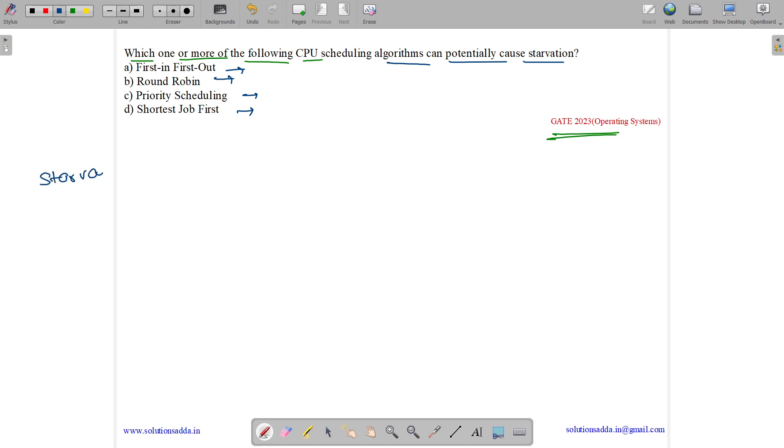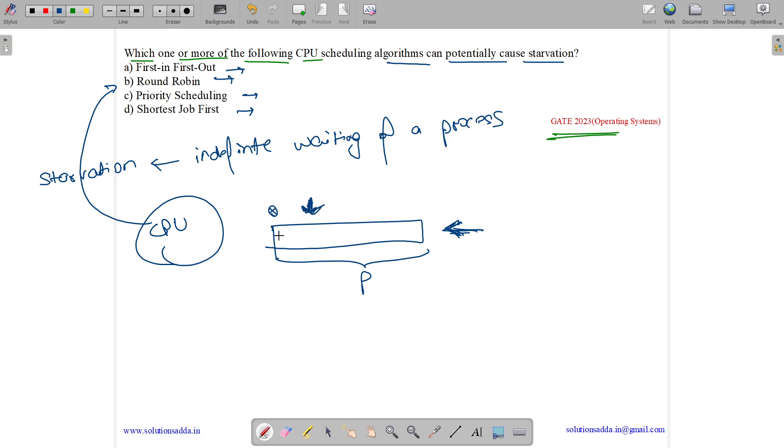First of all, let us understand what is the meaning of starvation. Starvation means indefinite waiting of a process. Suppose we have a pool of processes and some new processes are being entered, and we have CPU selecting based on the algorithm to schedule the process. Now suppose there is a particular process - first time it is denied as some other process is given priority over it. But starvation occurs when new processes keep on coming and every time this process gets denied. If there is such a condition then starvation will occur.